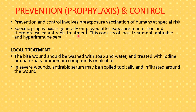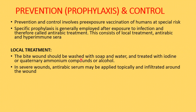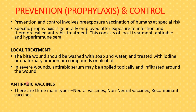For local treatment, the bite wound should be washed thoroughly with soap and water immediately after a rabid dog bite, then treated with iodine, quaternary ammonium compounds, or alcohol. Soap and water can effectively destroy the virus. In cases of severe wounds, anti-rabic serum may be applied topically and infiltrated around the wound.